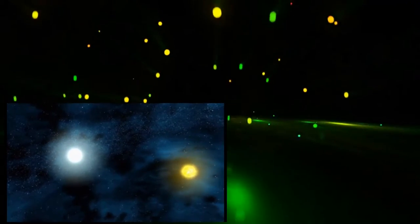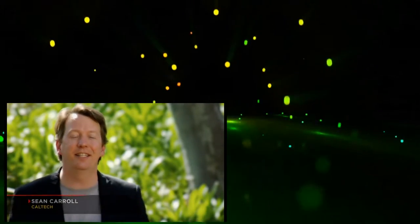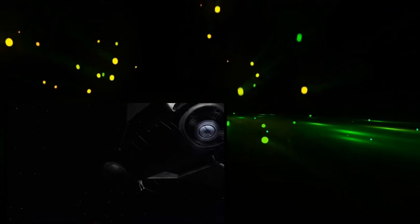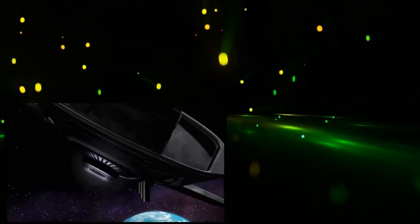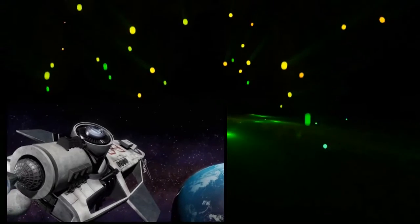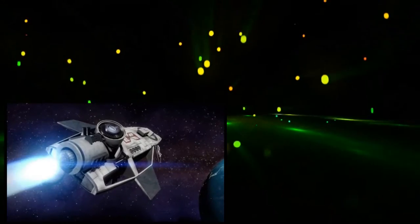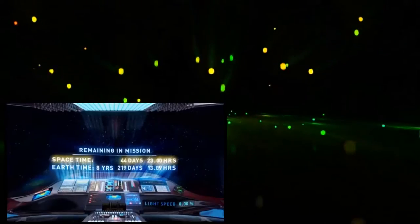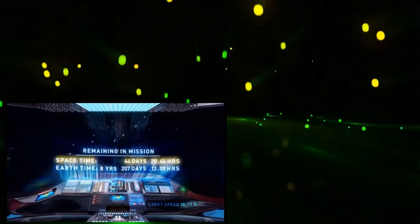We might as well be optimistic and say that we just move at 99.99% the speed of light all the way there and back. It would take about 8.6 years because Alpha Centauri is 4.3 light years away. But to the people on the ship, it would take about 45 days because they're traveling close to the speed of light.